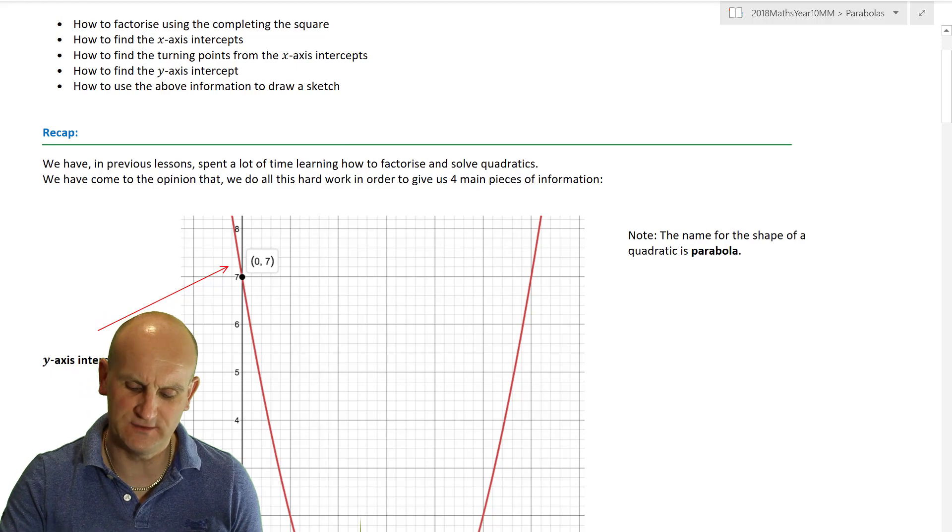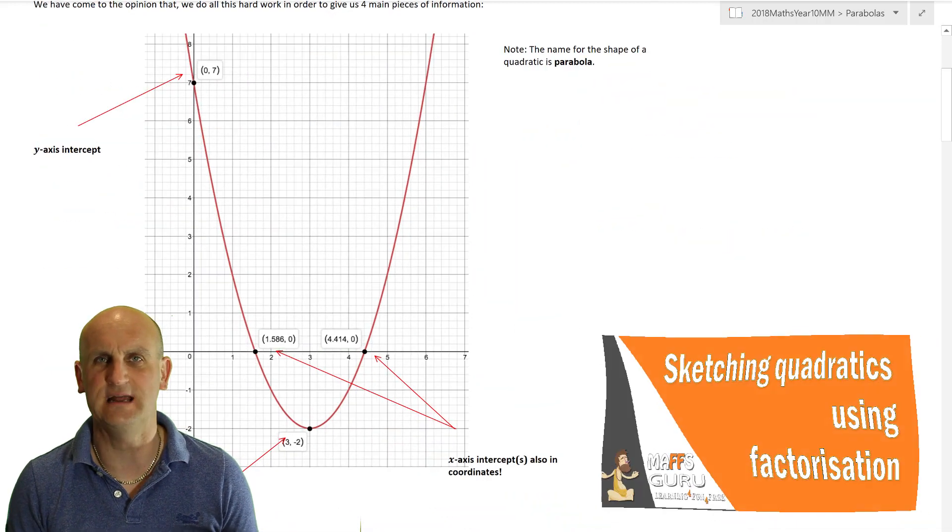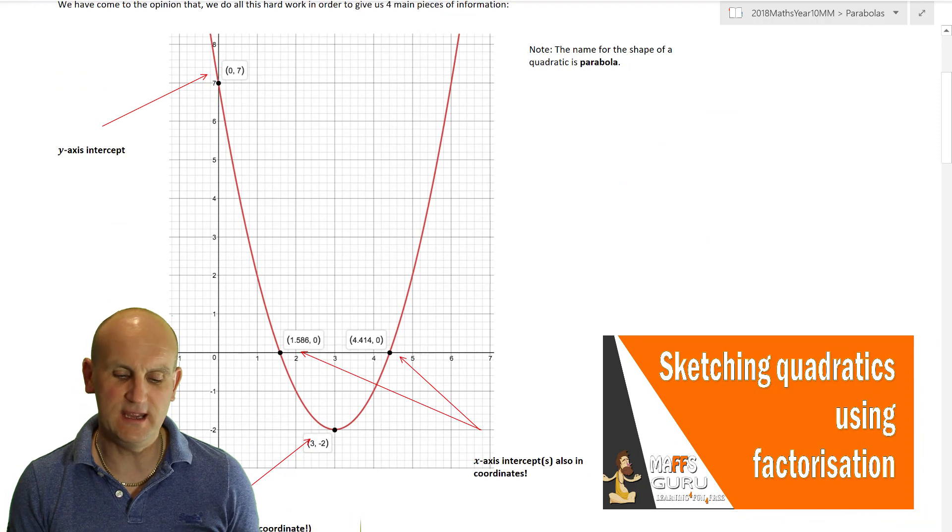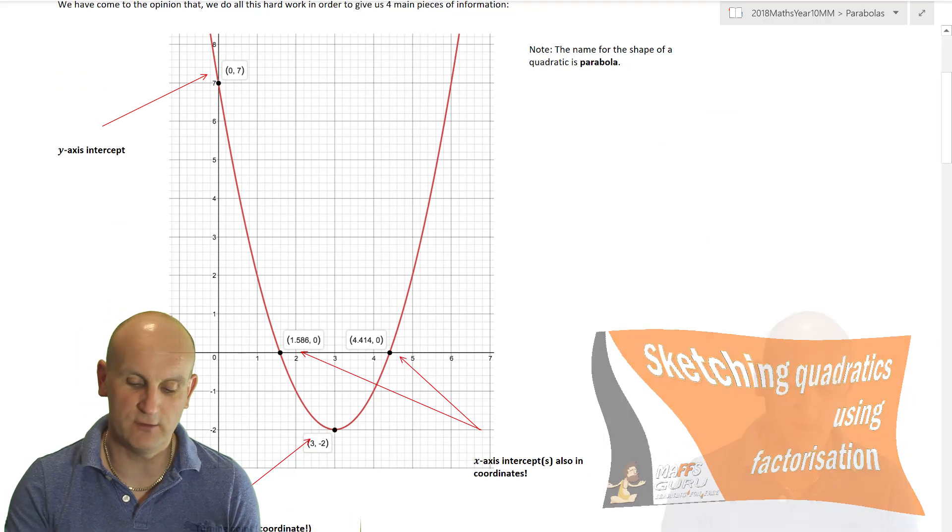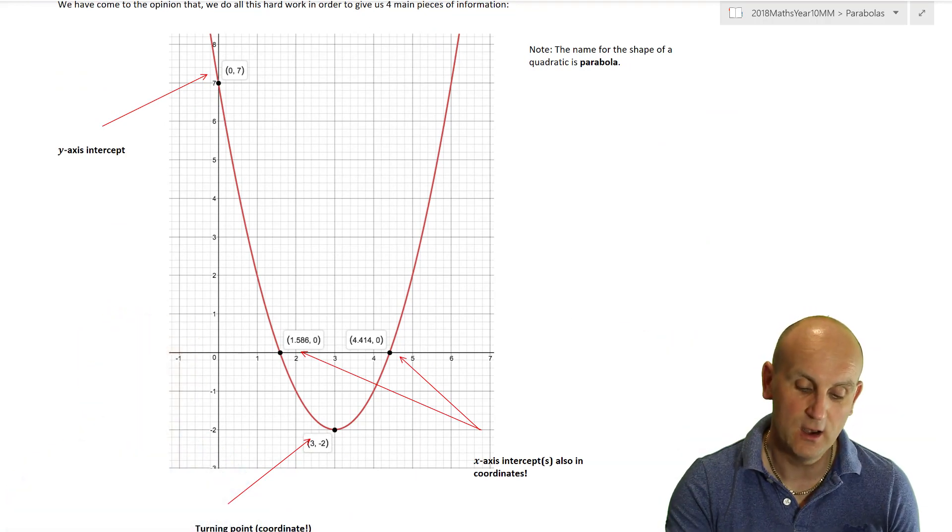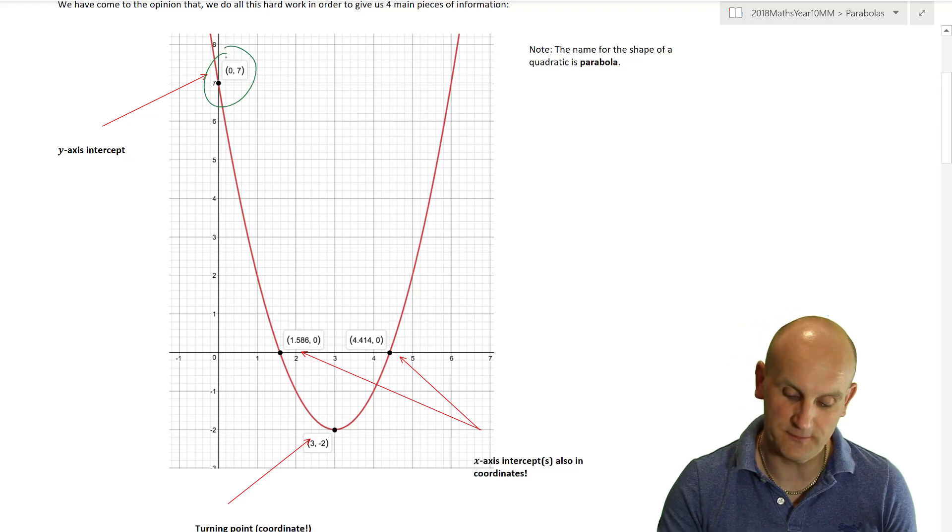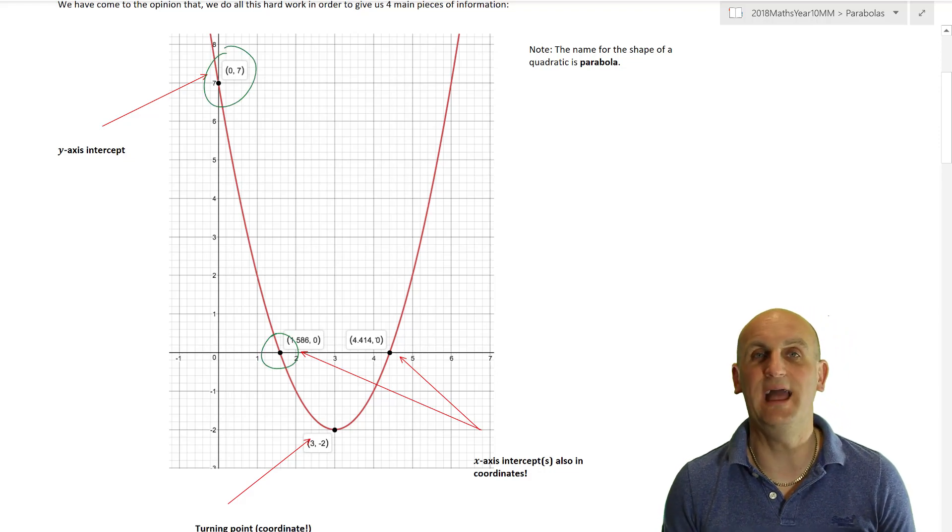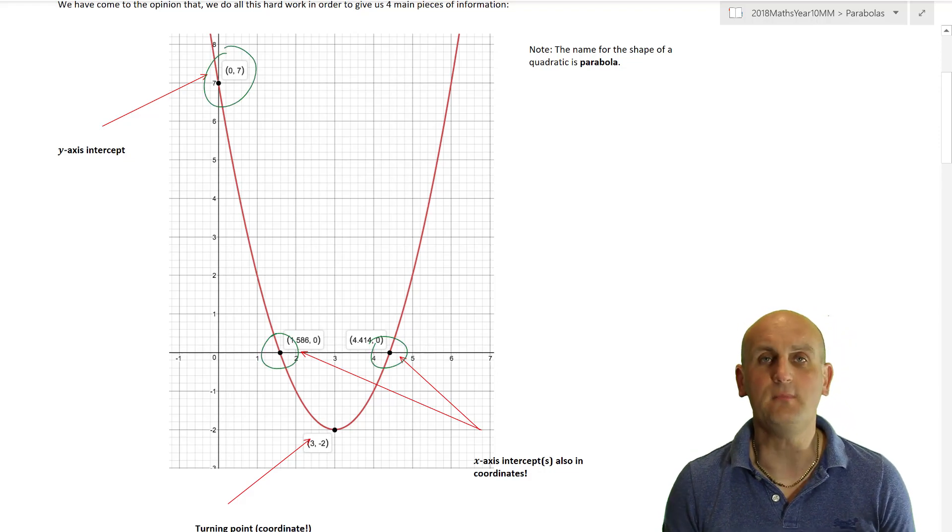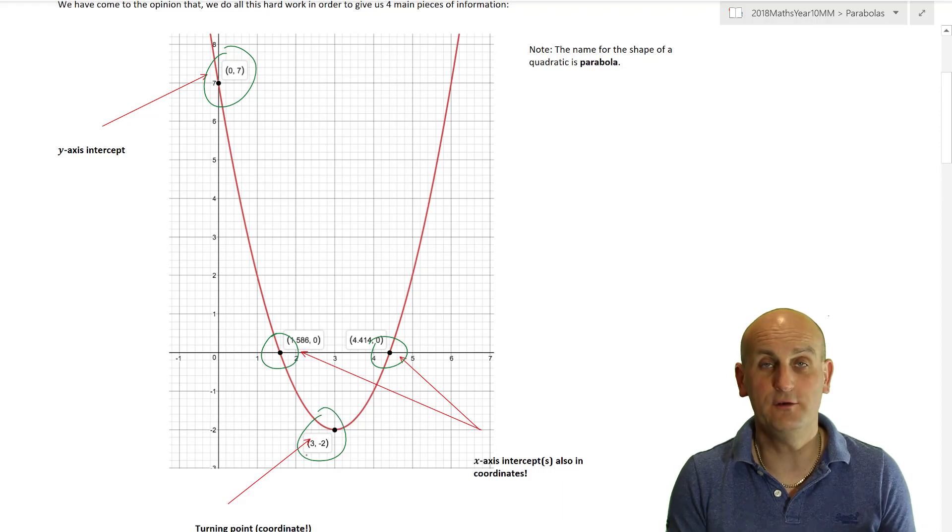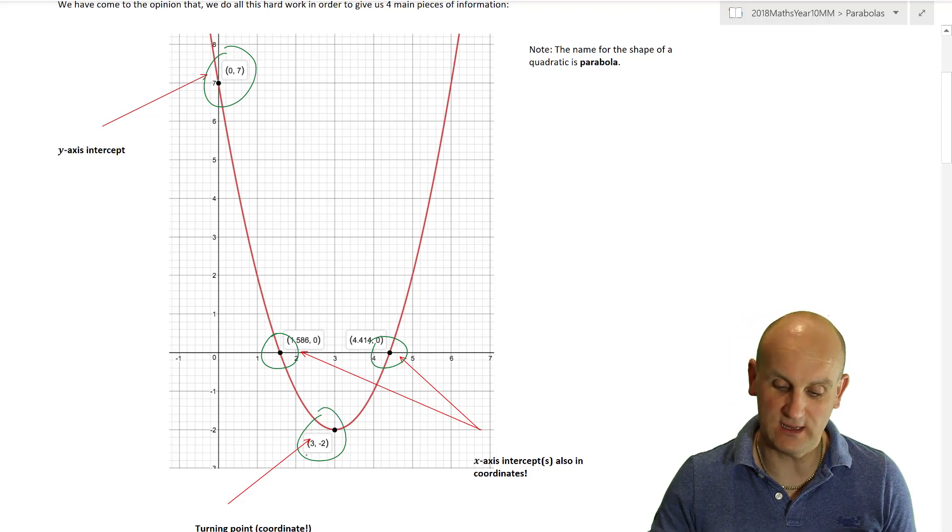Now, you're going to say, what four pieces of information? Well, you've missed out, ladies and gentlemen. The point of it is, what do we need to know to sketch any graph? Well, for a quadratic particularly, we need to know the y-axis intercept, we need to know our two x-axis intercepts, and our turning point. Knowing those four pieces of information, we can do pretty much everything.